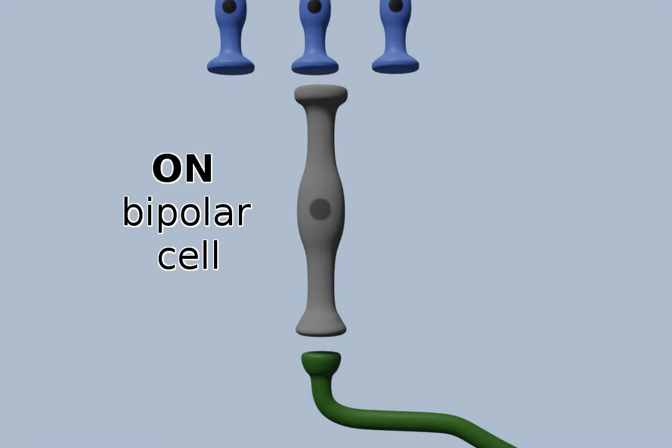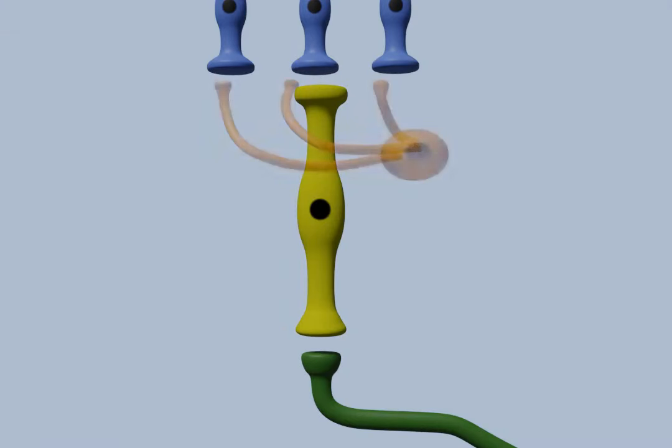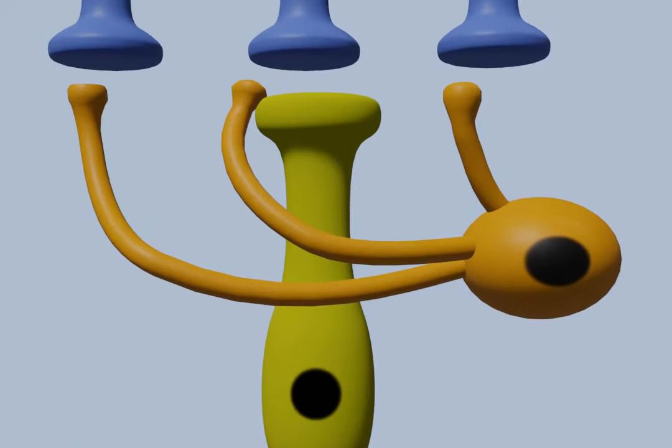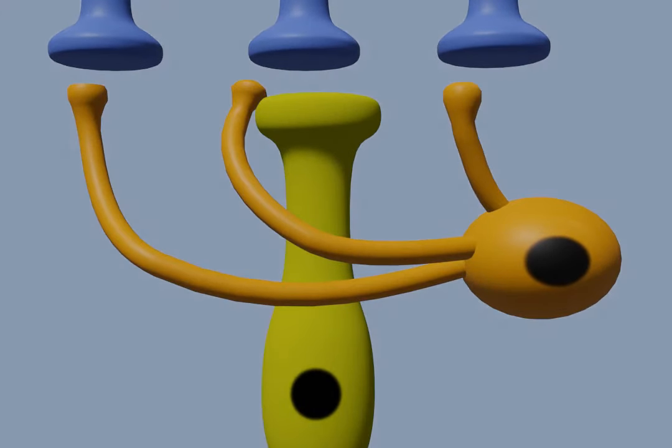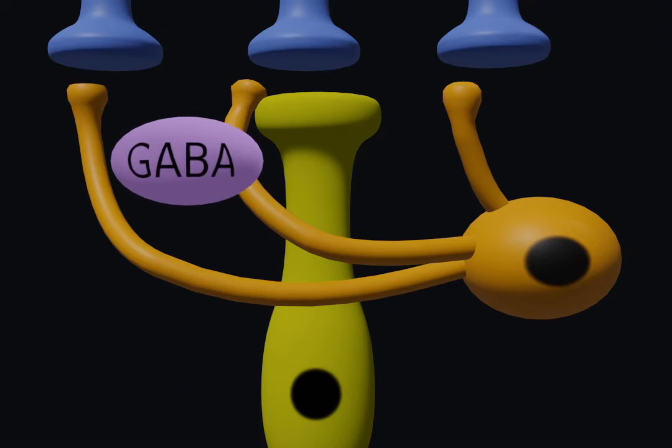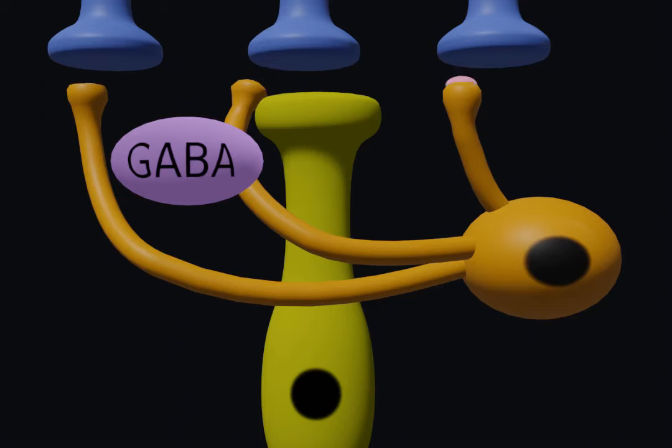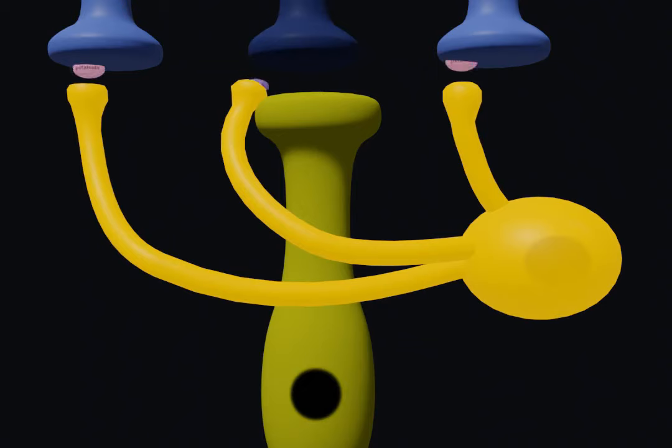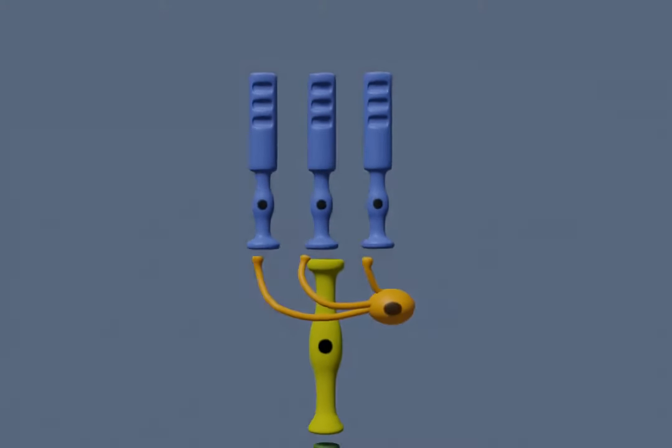Now let's take a look at the horizontal cell. The horizontal cell receives input from the surround photoreceptors and sends the signal to the center photoreceptor. It is an inhibitory interneuron, so when it's stimulated by the surround photoreceptors, it releases GABA onto the center photoreceptor. This inhibits the release of glutamate, which inhibits the signal. Now this is where things get interesting.